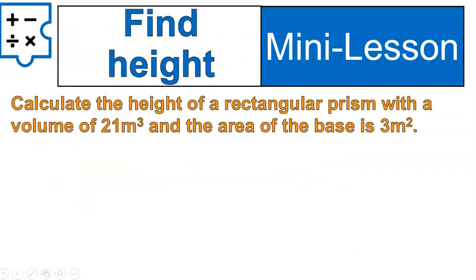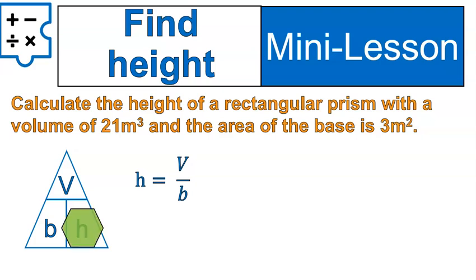The last thing you can calculate is the height. Calculate the height of a rectangular prism with a volume of 21 cubic meters and a base area of 3 square meters. You would use this formula — cover over the height, because that's what you're looking for — leaving you with volume divided by base. Take your volume, 21, divide by 3, and you're left with 7. Because you're calculating a height, it's just 7 meters, not square or cubic meters.